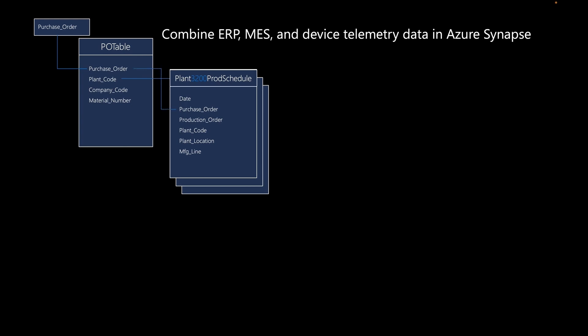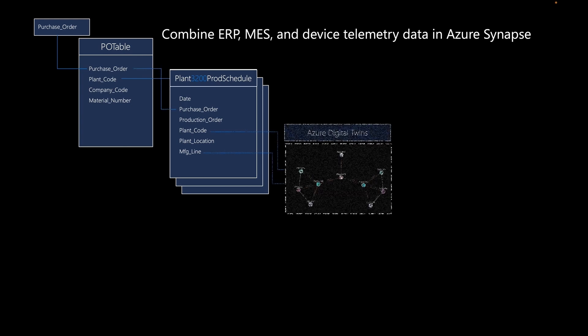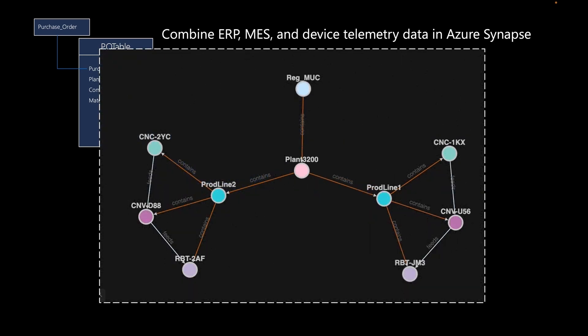With the production schedule, she now has the plant code and the manufacturing line responsible for manufacturing those widgets. With the plant code and the manufacturing line IDs, she can then perform a graph query to identify the stations responsible for manufacturing the widgets. In this case, she's going to run a graph query based on plant 3200 in production line two for that plant.